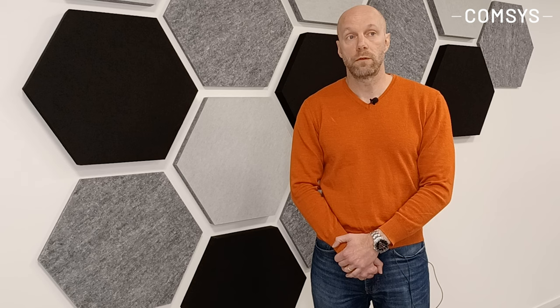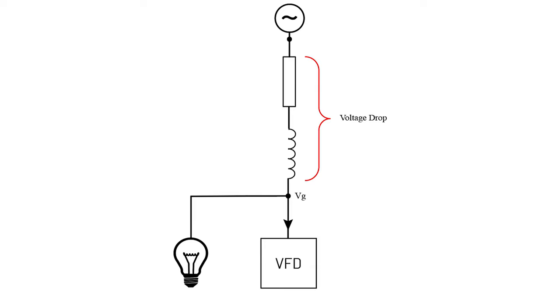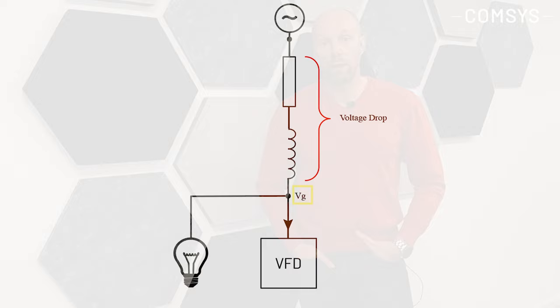If we go back to the source model and the load, we will see that we have a voltage drop over the inductor and over the resistor, and this voltage drop is what is creating the problem. Because if we look at point Vg — the voltage at the secondary of the transformer, your incoming feeder to the facility, or the outlet in the wall — we will see that since we have a voltage drop over the resistance and the inductor, we will actually have a distorted voltage.